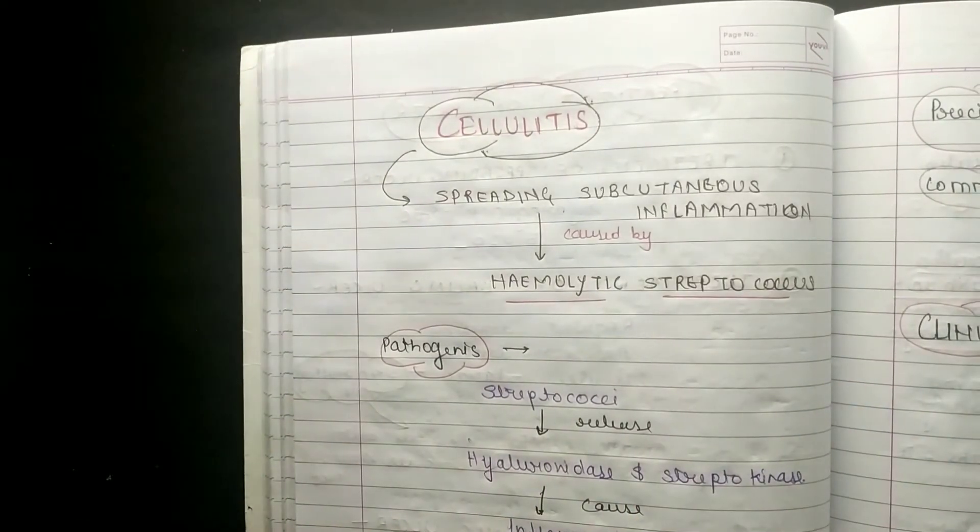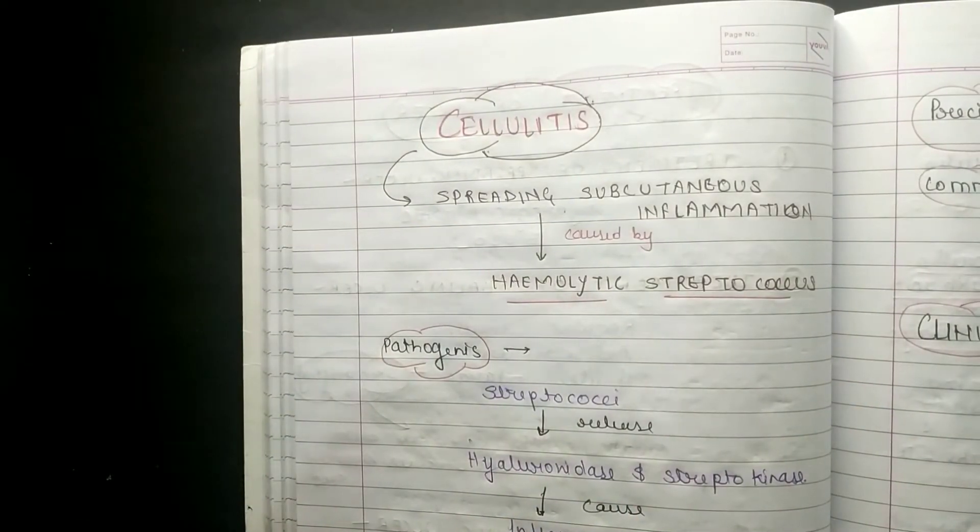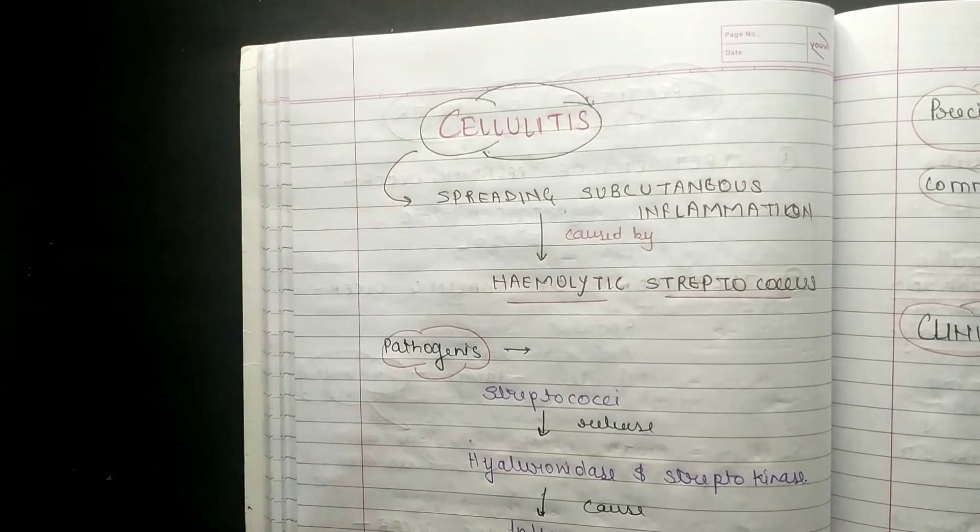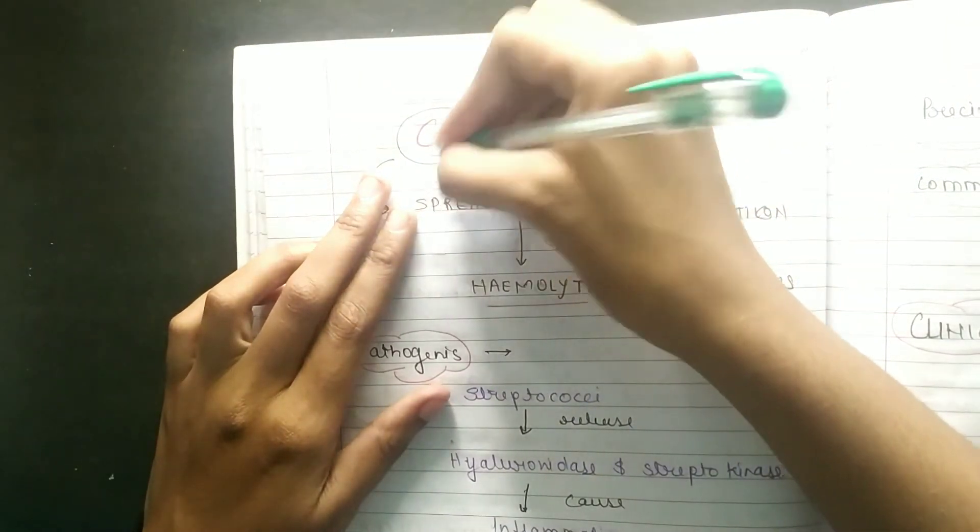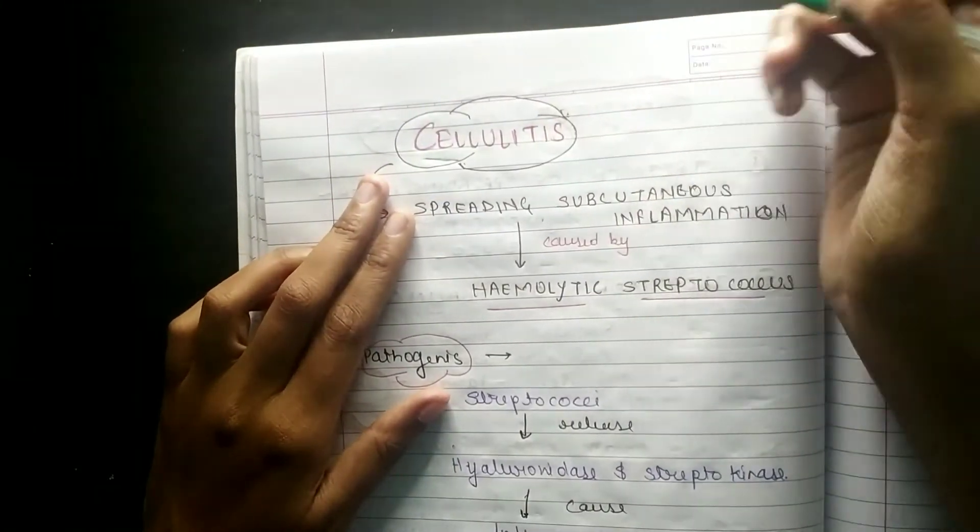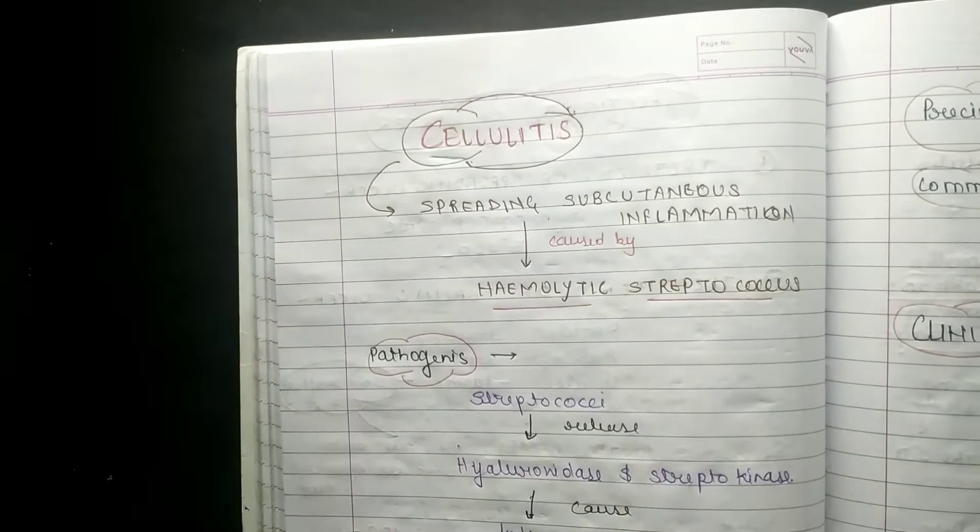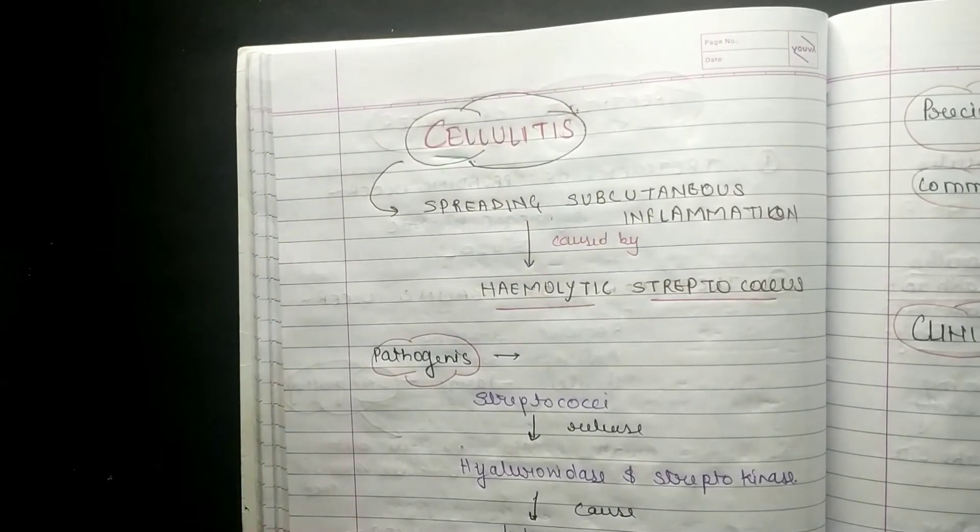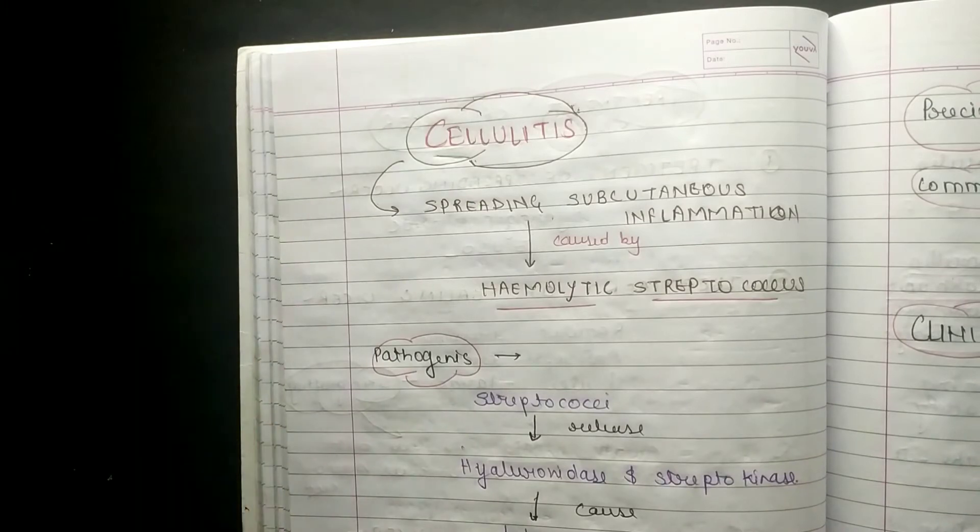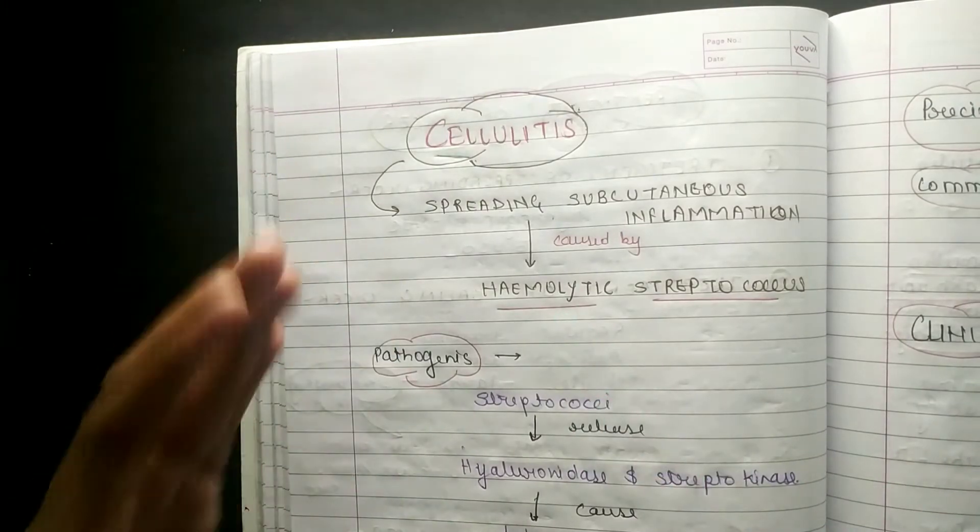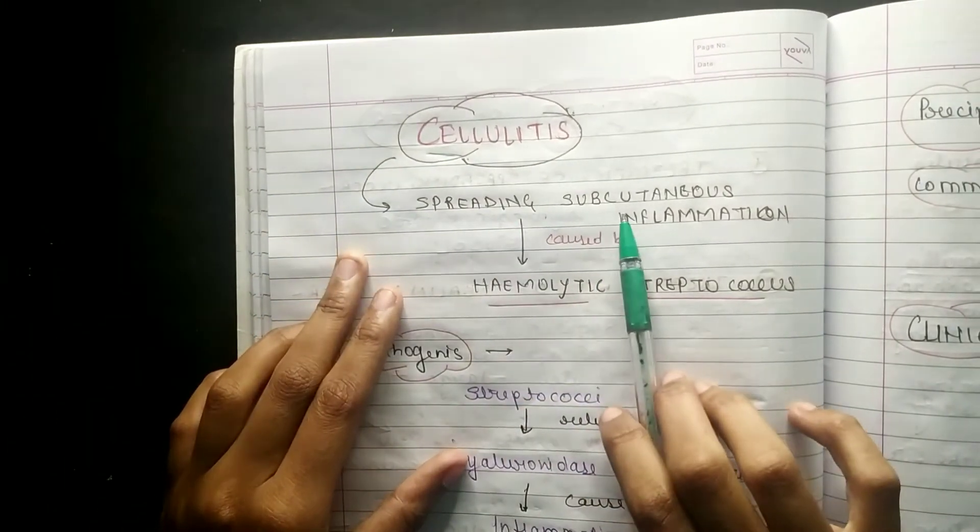Hello everyone, welcome to SAM, that is Study Art Motivation and Education. In this video we are going to discuss cellulitis. Cellulitis is an inflammation of subcutaneous tissues, and it used to spread. So its definition is spreading subcutaneous inflammation.